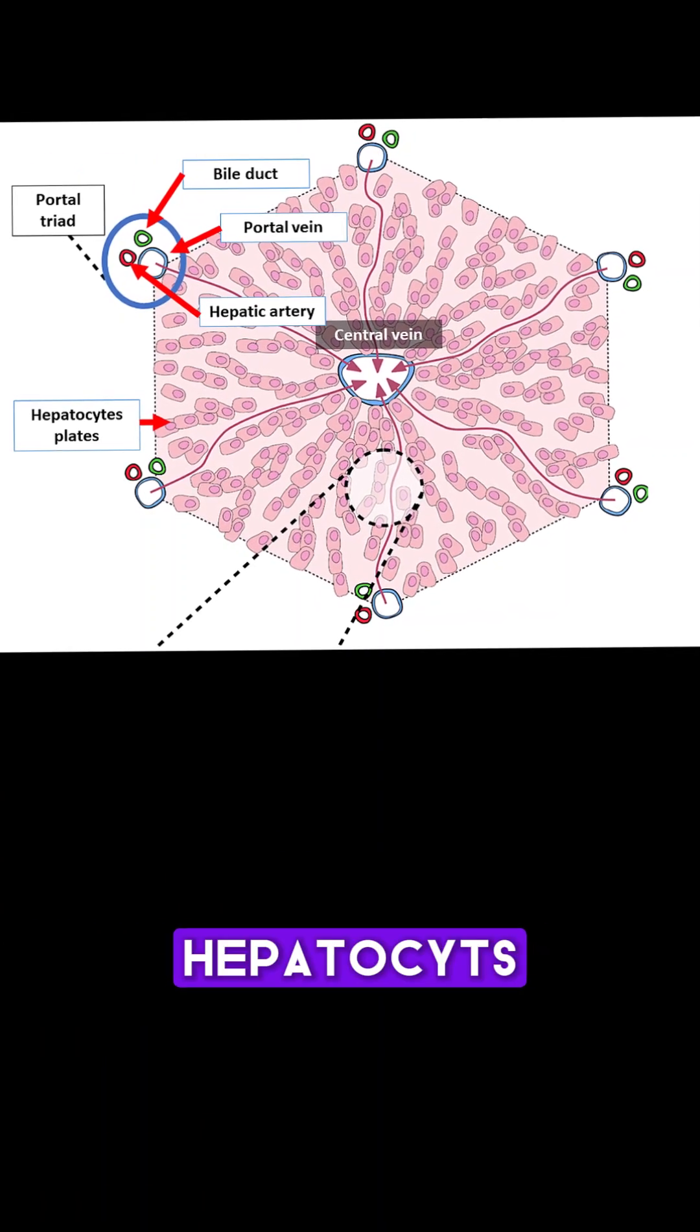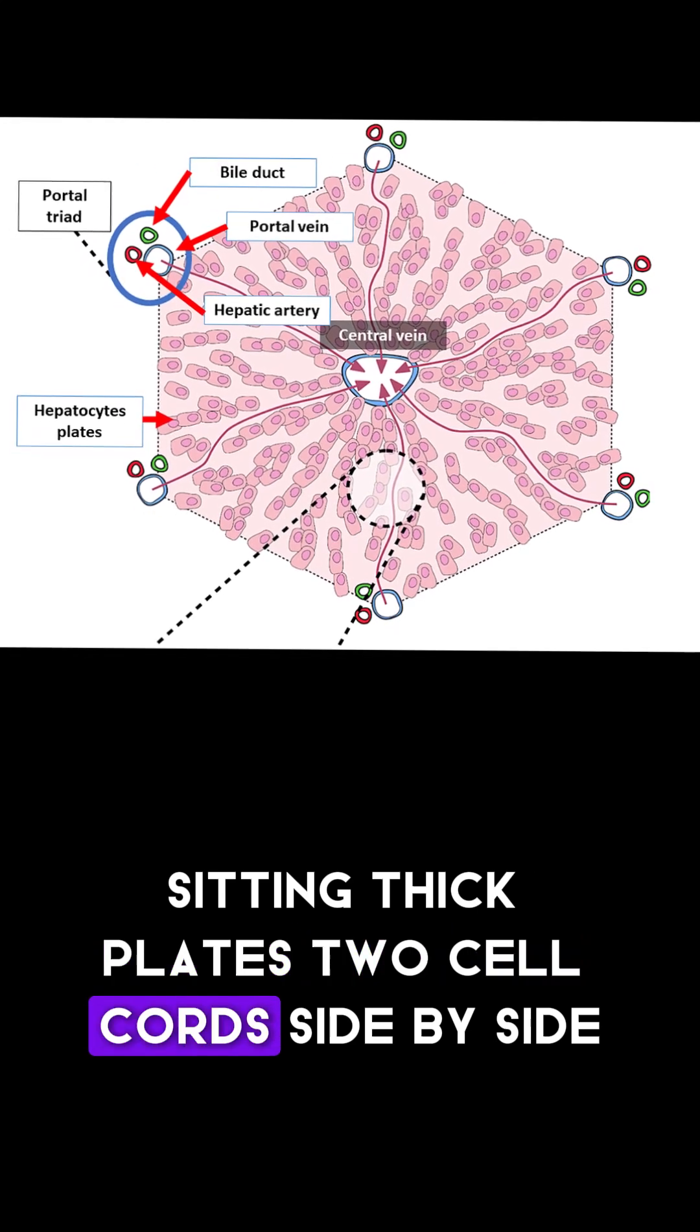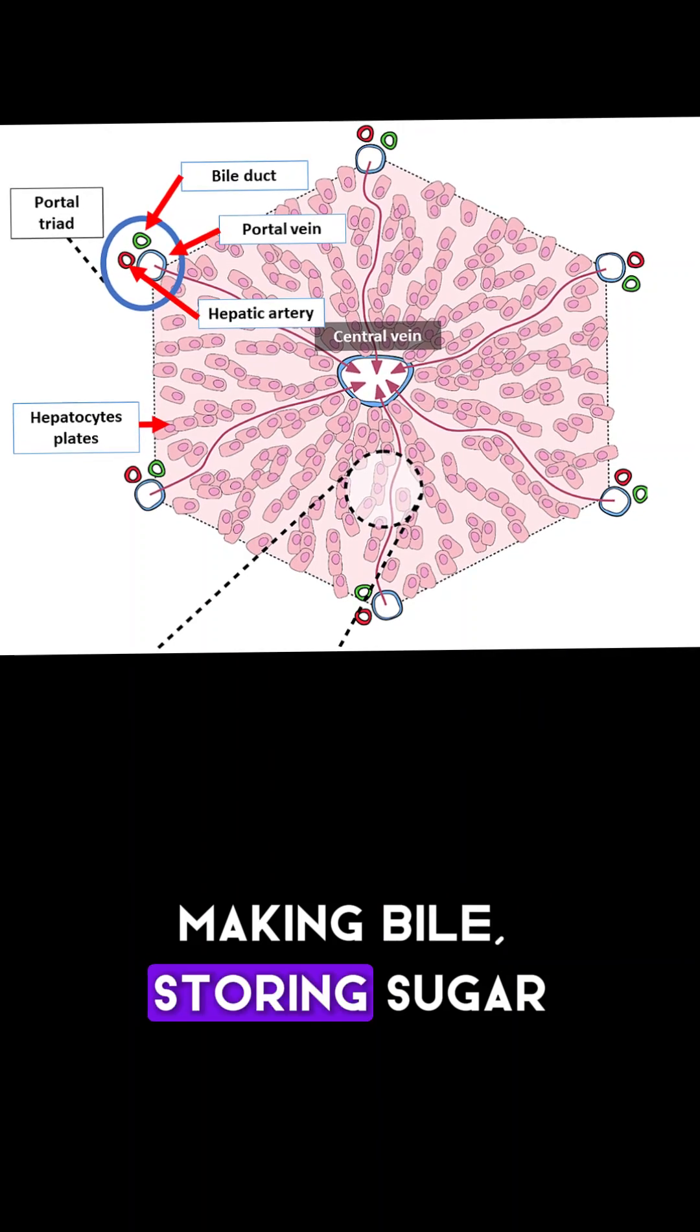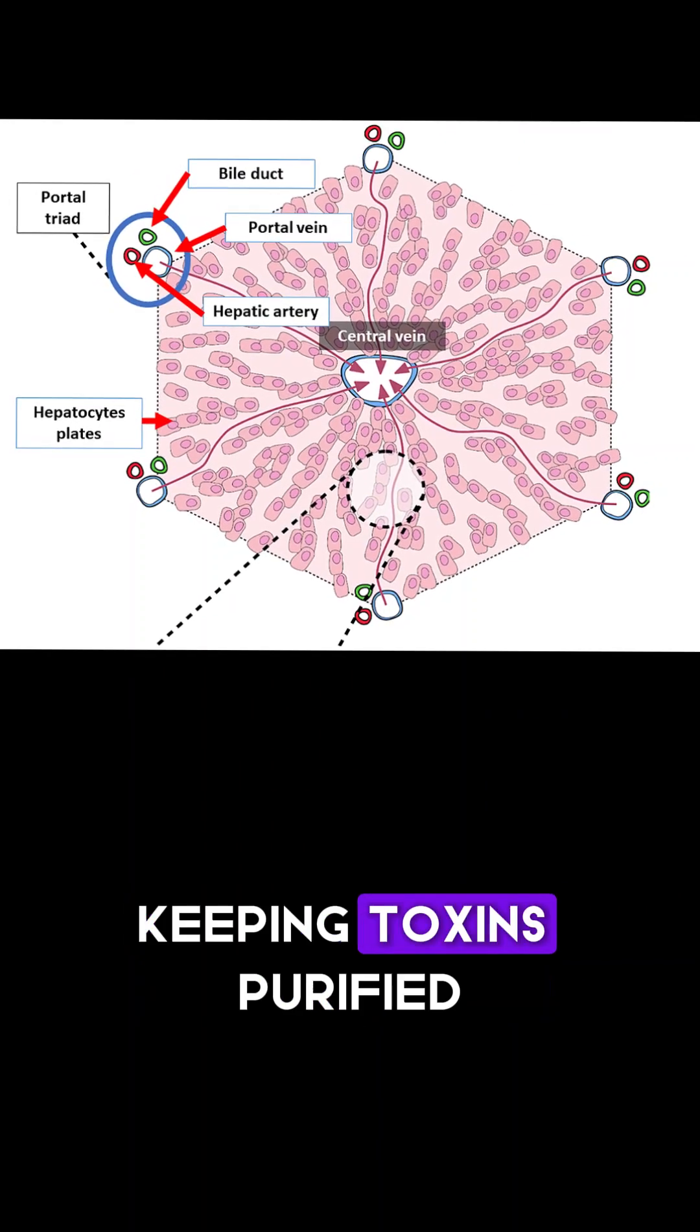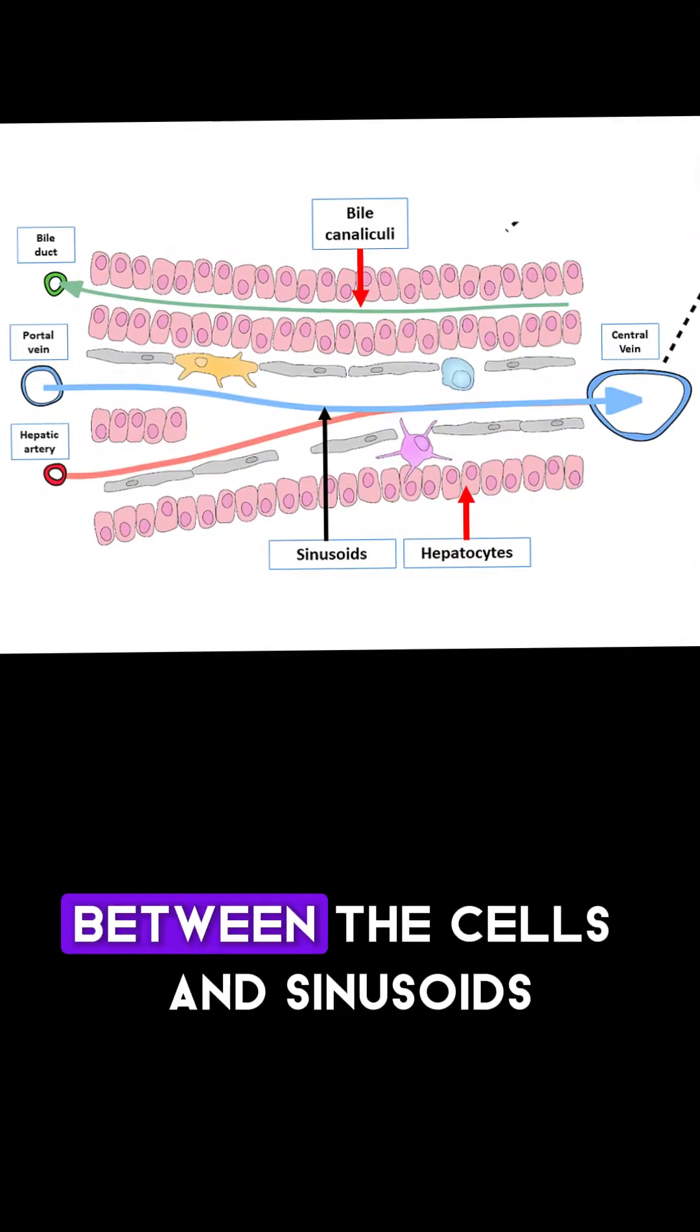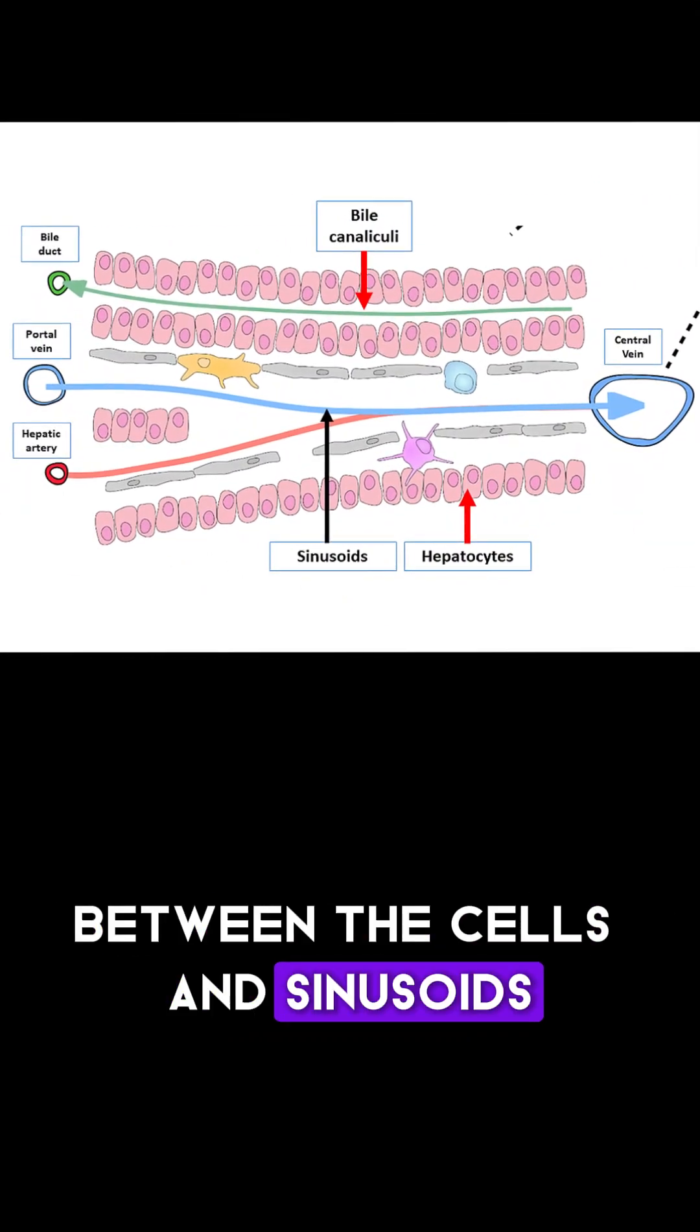Hepatocytes sit in thick plates, two-cell cords side by side. Making bile, storing sugar, keeping toxins purified.